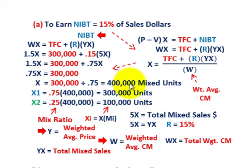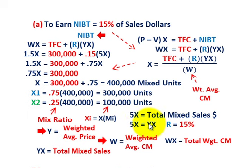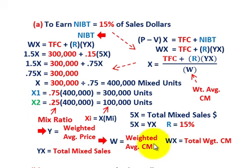Just to recap the variables: W is the weighted average contribution margin; Y is the weighted average price ($5 per unit); WX is the total weighted contribution margin; YX is the total mixed sales dollars; and R was given at 15%. These are the key components of our equations and how they fit together.